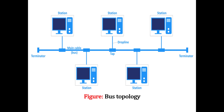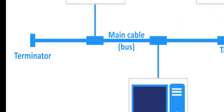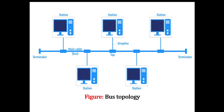For example, if there are 10 computers in the bus topology, then we require one backbone cable and 10 drop lines, and hence 10 taps. As you can see in the figure, there are two terminators at the two ends. A terminator is a device attached to the endpoints of a bus network — typically a resistor placed at the end of a bus to prevent reflection of signals. The purpose of the terminator is to absorb signals so that they do not reflect back down the line.